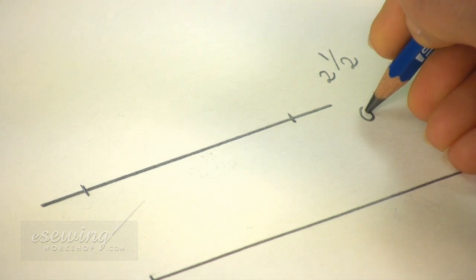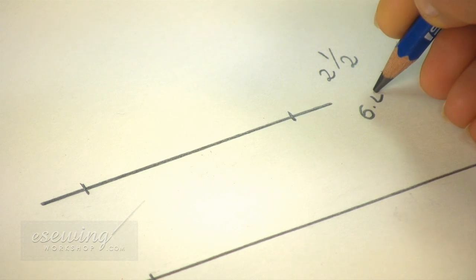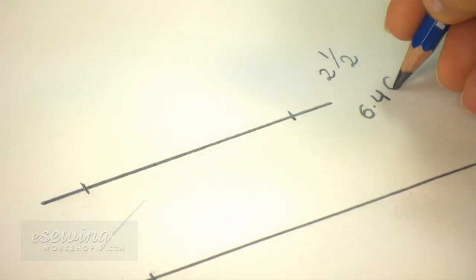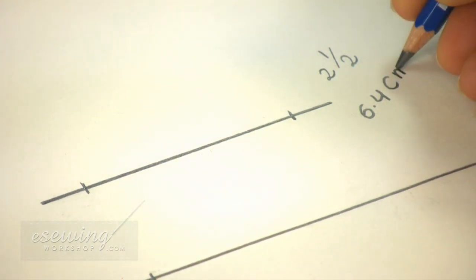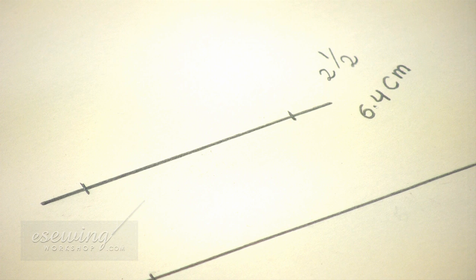We write fractions of a centimeter in decimals. So all we need to do is write 6.4 centimeters, indicating the decimal with a point. This only works because each centimeter is divided into 10 sections.